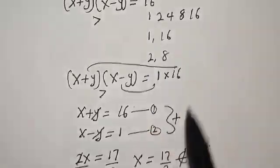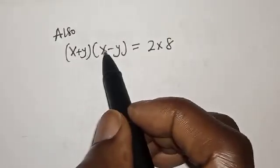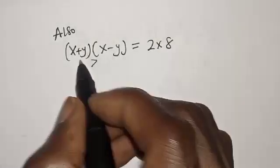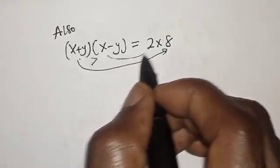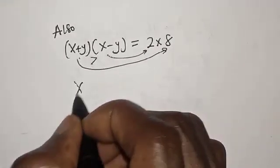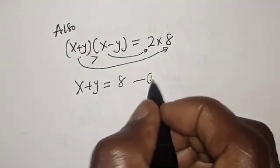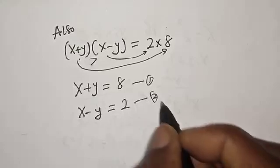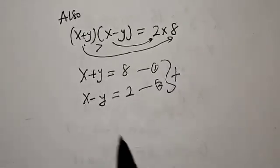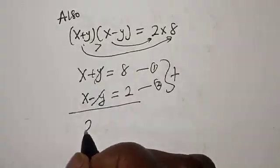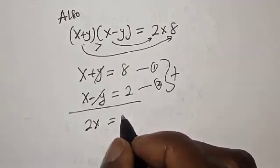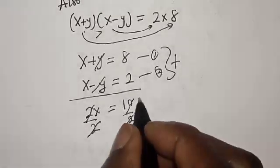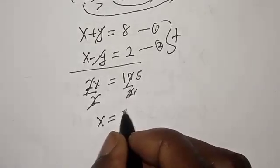Let's check for 2 and 8. We have (x plus y)(x minus y) equal to 2 multiplied by 8. Since x plus y is greater than x minus y, 8 is greater than 2, so x plus y equals 8 (equation 1) and x minus y equals 2 (equation 2). Adding the two equations together, the y terms cancel: 2x equals 8 plus 2, which is 10. Dividing both sides by 2, x is equal to 5.